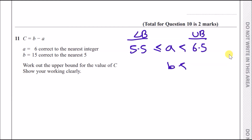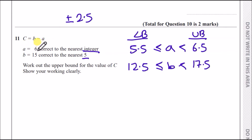For b being rounded to the nearest five, instead of the typical ±0.5, we halve the rounding unit of five to get ±2.5. So b ranges from 12.5 to 17.5. The same logic applies to a: rounding to the nearest one means ±0.5. This gives a range of 5.5 to 6.5 for a.